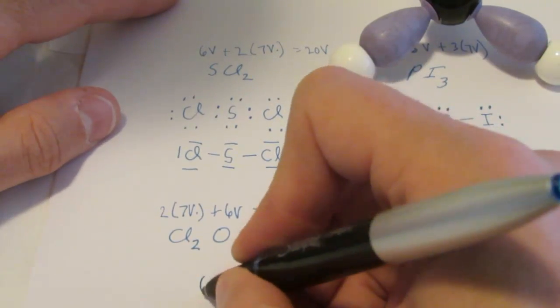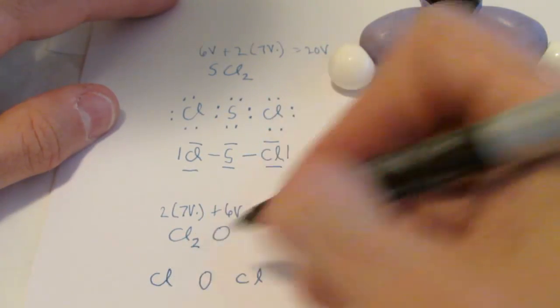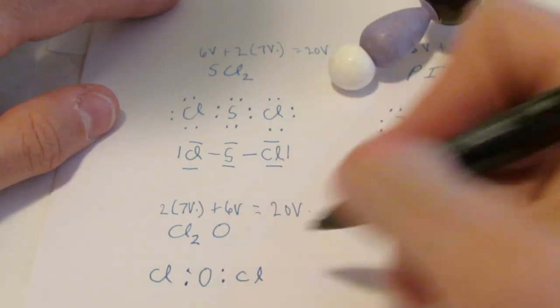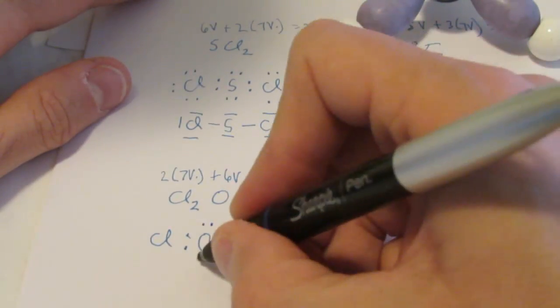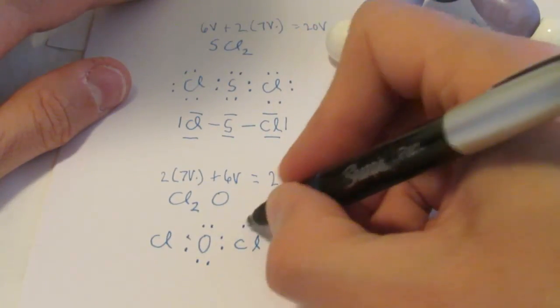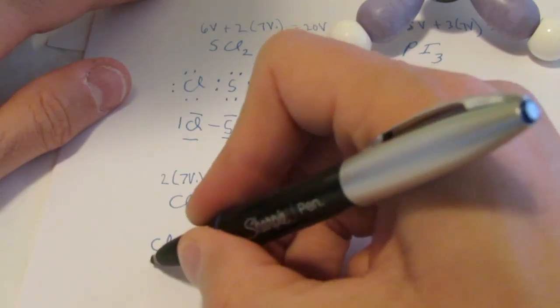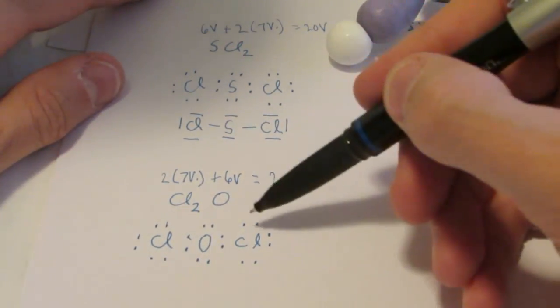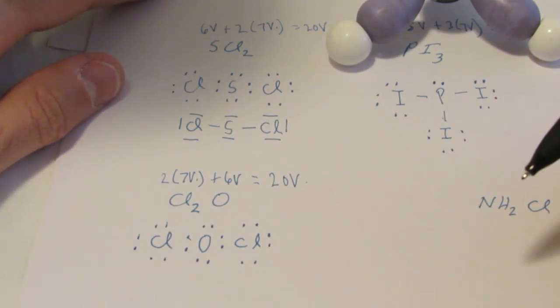So we'll put oxygen in the middle, once again, to try to maintain some type of symmetry. Put the Cls on either side. Put a pair between oxygen and each chlorine. Look, I'm back to drawing dots again. I'll put a pair above and below oxygen. We'll complete the octets for chlorine. Let's count up our dots to see if we've used 20. 2, 4, 6, 8, 10, 12, 14, 16, 18, 20. Boom! Perfect.